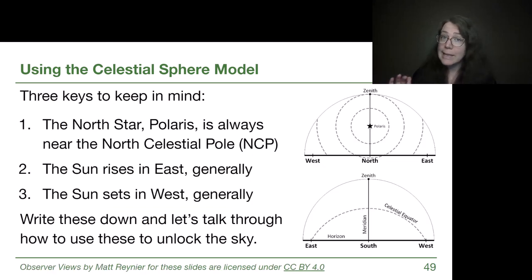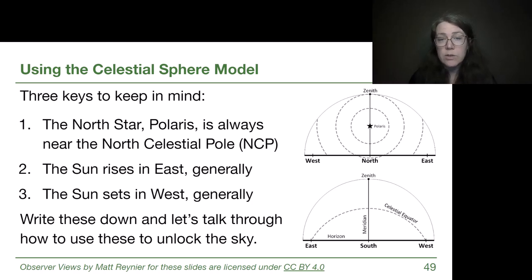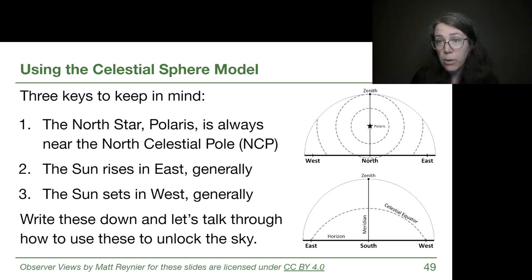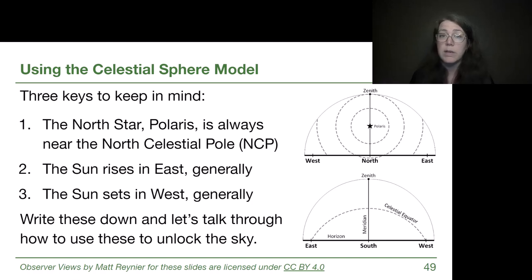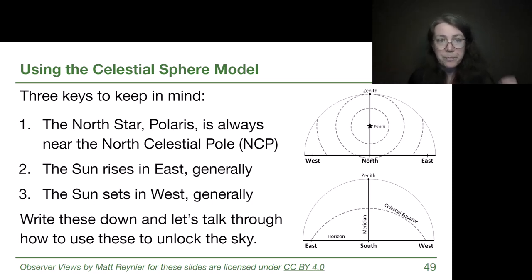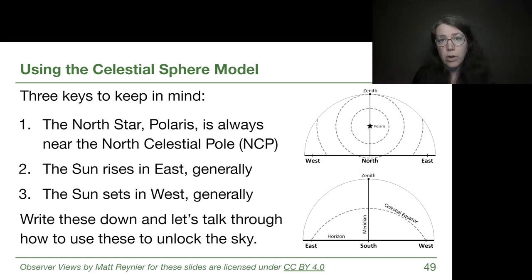There are three key ideas we can use as a foundation to build all our other understanding. The first: the North Star, Polaris, is always near the north celestial pole. That means we can face due north and see it, and it is along the meridian. So Polaris gives us a way to orient ourselves either physically when we're outdoors on a clear night sky or when we're drawing in our notes.